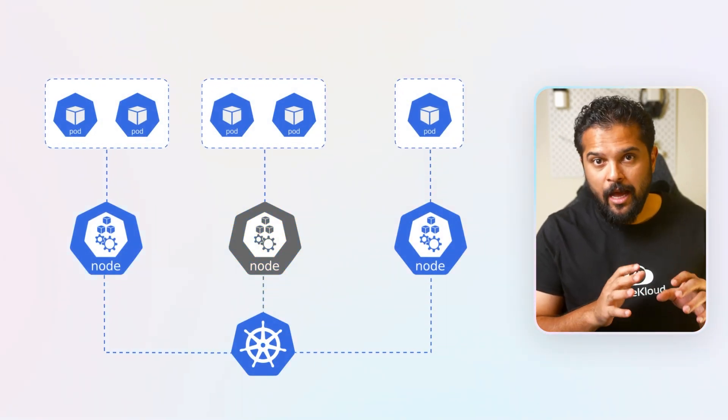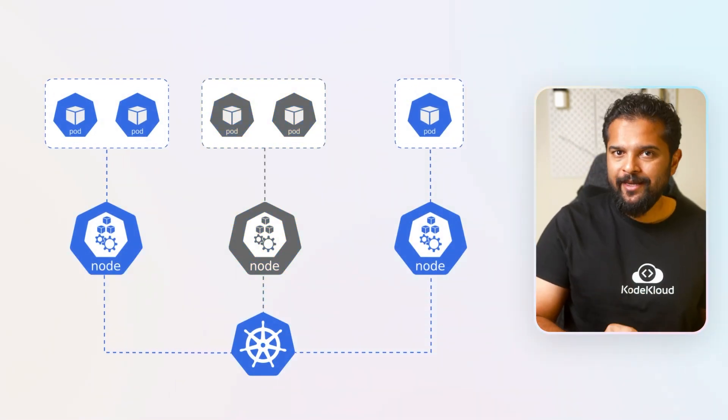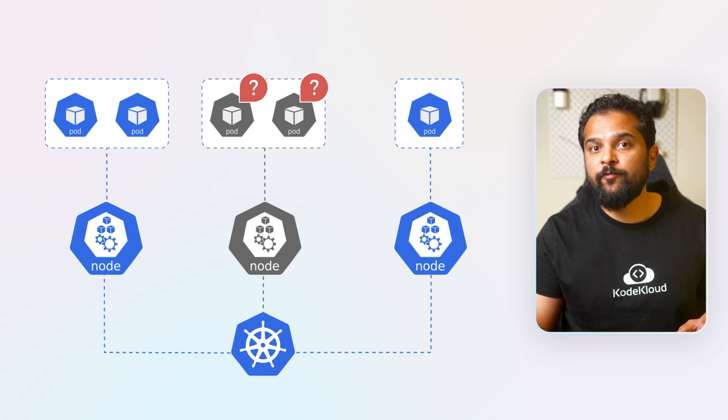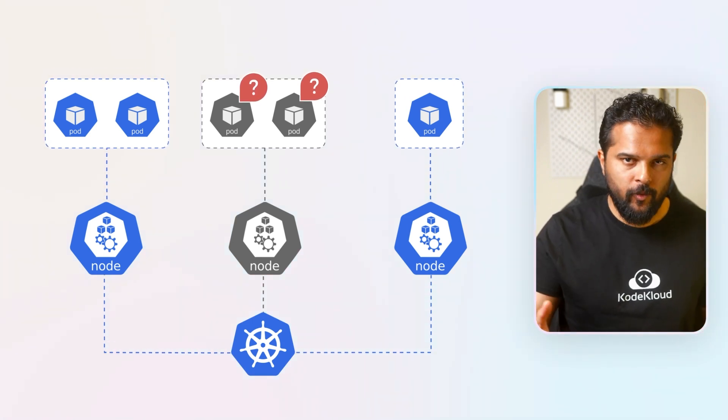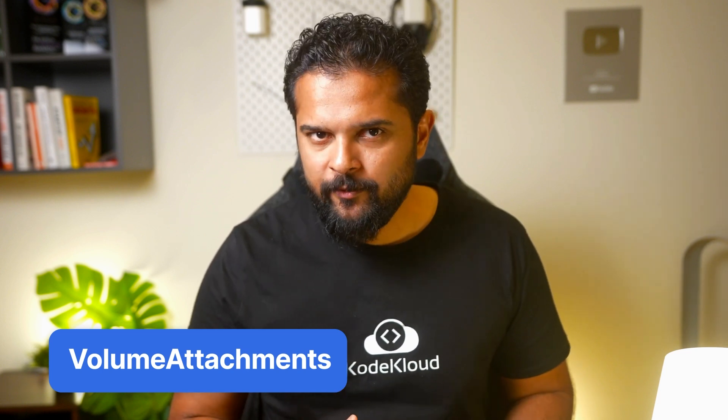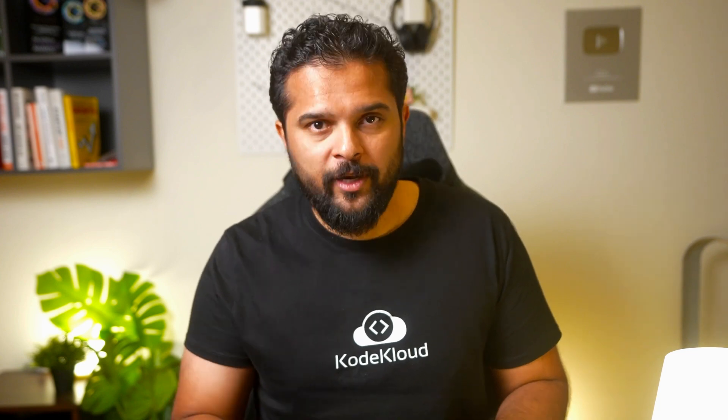Before this enhancement, if a node shut down unexpectedly, the pods running on that node would remain in an unknown state for a prolonged period, preventing them from moving to a new operational node. The reason is that the kubelet on the shutdown node isn't available to delete the pods, which means deployments or stateful sets can't create a pod with the same name. Additionally, if these pods use volumes, the volume attachments won't be deleted from the original shutdown node, preventing the volumes from being attached to a new operational node and leading to disruptions in the application's functionality.